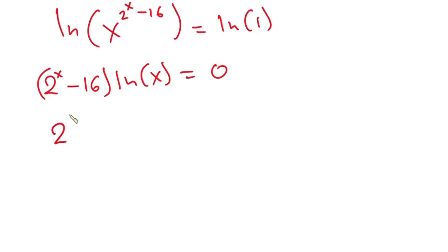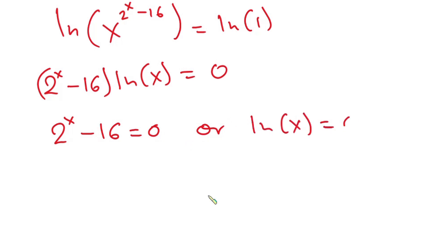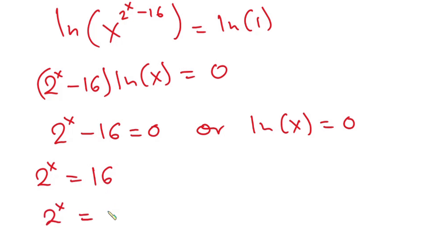This means either 2 to the power x minus 16 is equal to zero, or the natural log of x is equal to zero. For the first case, 2 to the power x equals 16, which I can rewrite as 2 to the power x equals 2 to the power 4. Since the bases are the same, I can equate the exponents, so x is equal to 4.